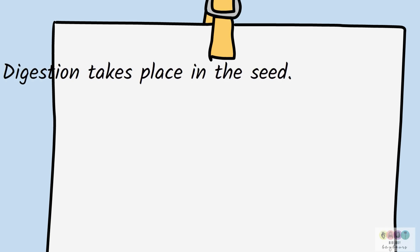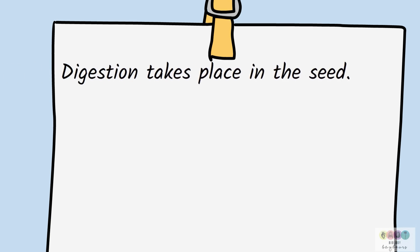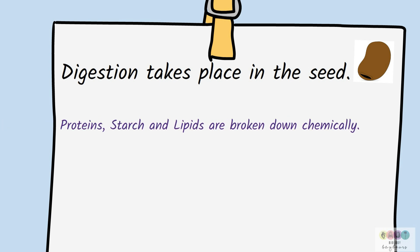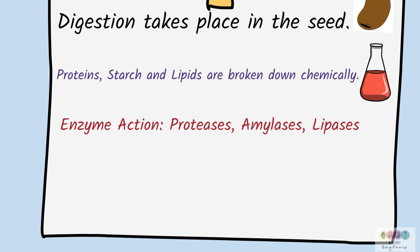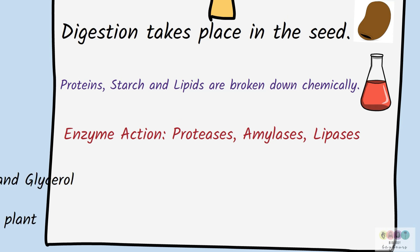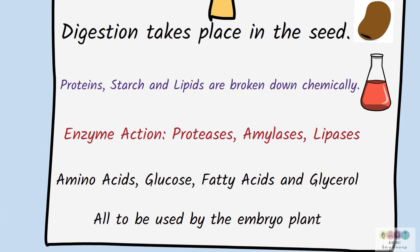It's very important that you recognise that digestion is taking place in the seed. Remember the seed has all of these food reserves that must be broken down and used by the embryo plant. So there are proteins, starches, and lipids, and these are all going to be broken down by the action of enzymes. Eventually those smaller, more soluble subunits are going to be used by the embryo plant for energy and for building — in other words, to grow.